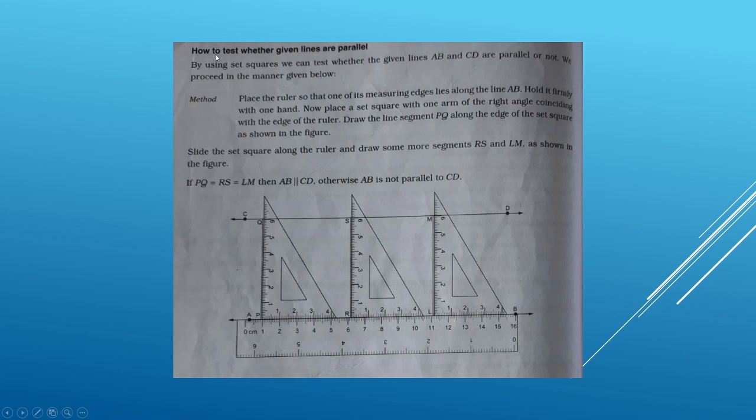How to test whether the given lines are parallel or not? We are given two lines AB and CD. We have to test whether these two lines are parallel or not. By using a set square, we can test whether the given lines AB and CD are parallel or not. We proceed in the manner given below.